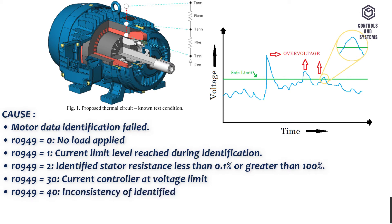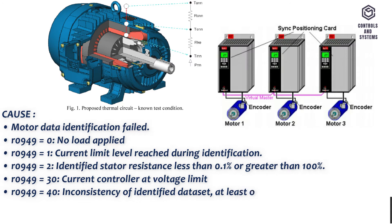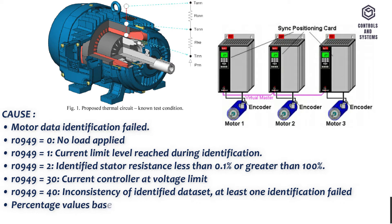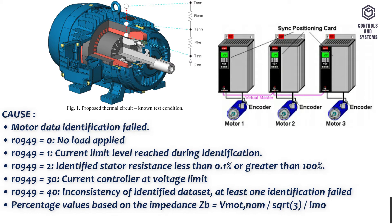R0949 equals 2: identified stator resistance less than 0.1% or greater than 100%. R0949 equals 30: current controller at voltage limit. R0949 equals 40: inconsistency of identified data set, at least one identification failed. Percentage values based on the impedance ZB equals VMOT(NOM) divided by SQRT3 times IMOT(NOM).